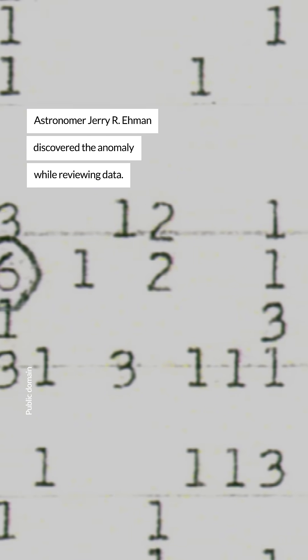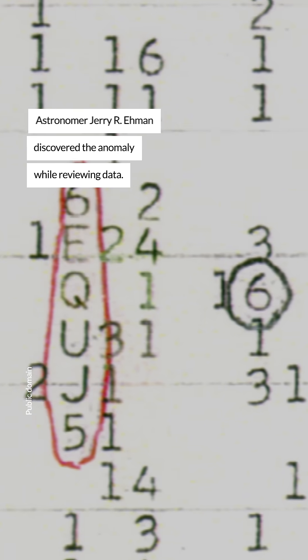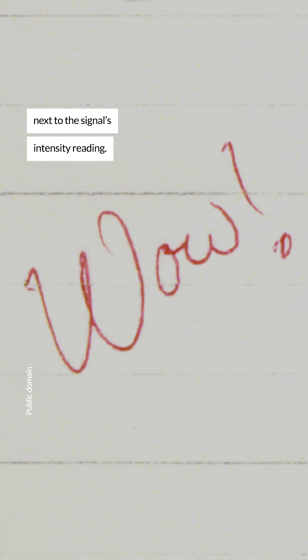Astronomer Jerry R. Amen discovered the anomaly while reviewing data. He was so astonished that he wrote 'wow' next to the signal's intensity reading.